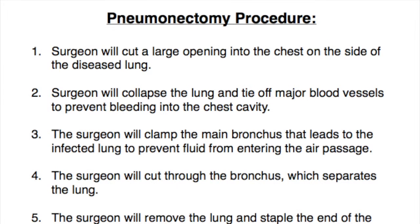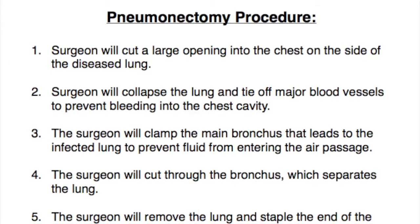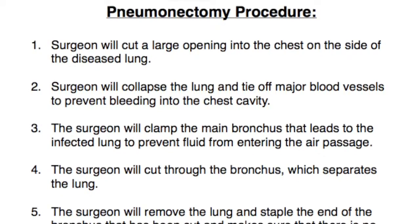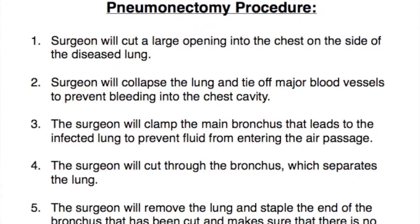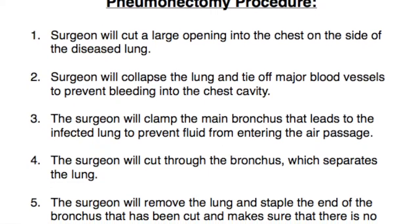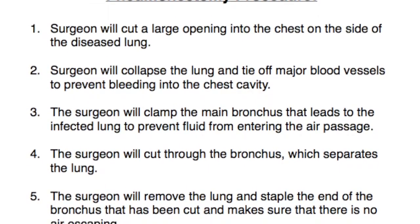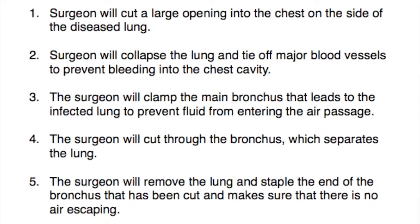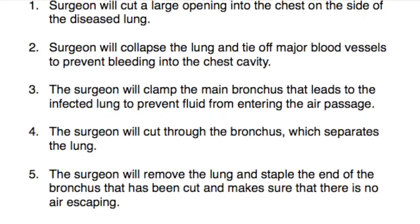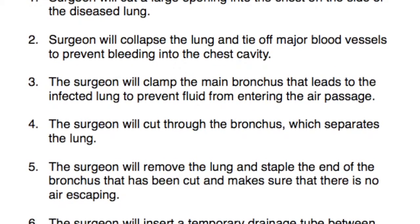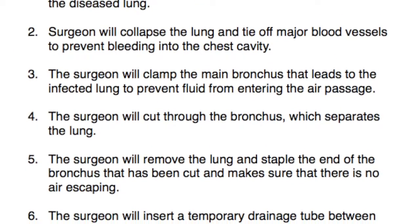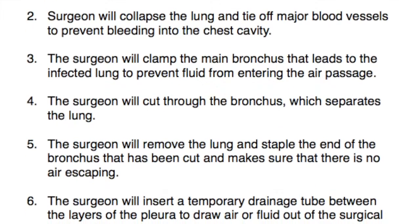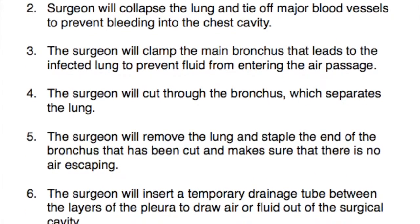Now we will inform you of the step-by-step procedure of the pneumonectomy surgery. First, the surgeon will cut a large opening into the chest on the same side as the diseased lung. Secondly, the surgeon will collapse the lung and tie off the major blood vessels to prevent any bleeding into the chest cavity. Then the surgeon will clamp the main bronchus that leads to the diseased lung to prevent fluid from entering the air passage, and cut through the bronchus separating the lungs.